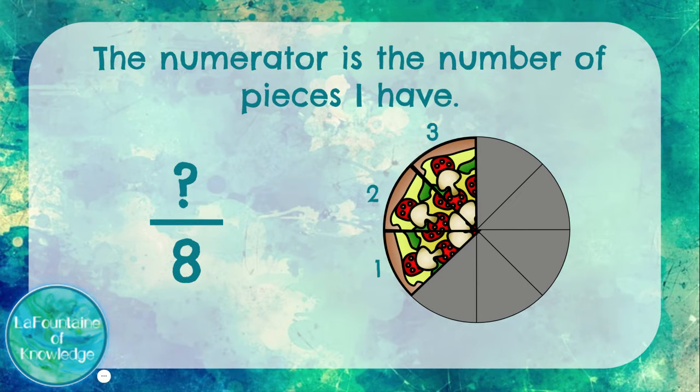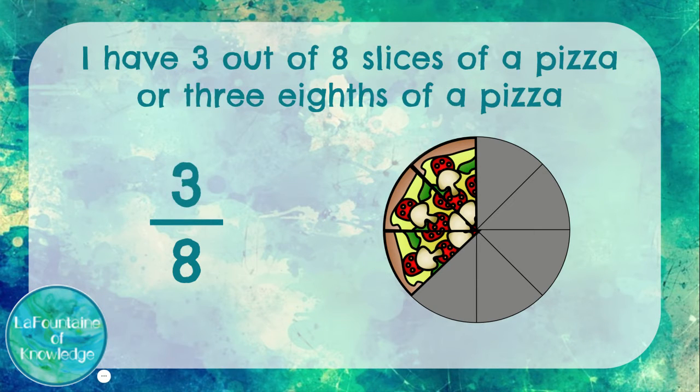The numerator is the number of pieces I have, which is three. So I have three out of eight slices of a pizza, or three-eighths of a pizza.